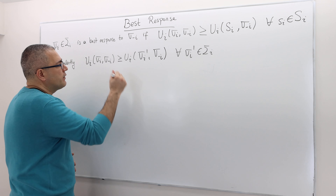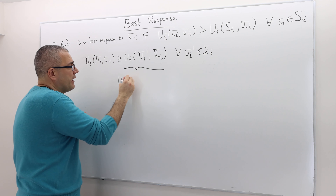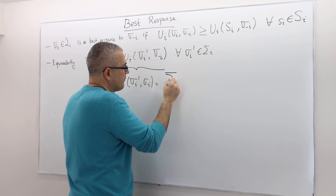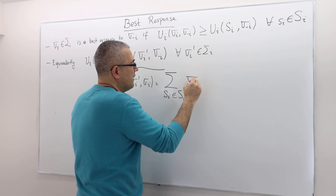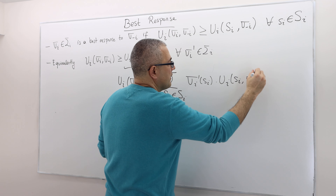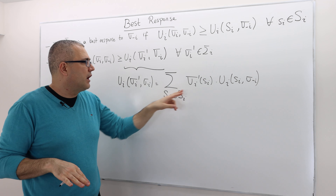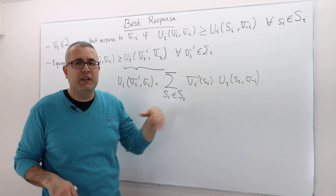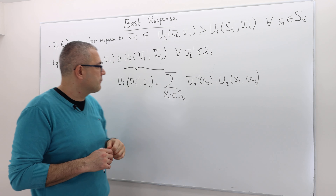Why is that so? Consider the expected payoff. The payoff u_i(sigma_i', sigma_{-i}) is the expected payoff, and it equals the summation over s_i in S_i of sigma_i'(s_i) multiplied by u_i(s_i, sigma_{-i}). So sigma_i' is a mixed strategy — a probability distribution over pure strategies — and I multiply the probability of each pure strategy times the utility at that strategy, conditional on opponents playing sigma_{-i}.